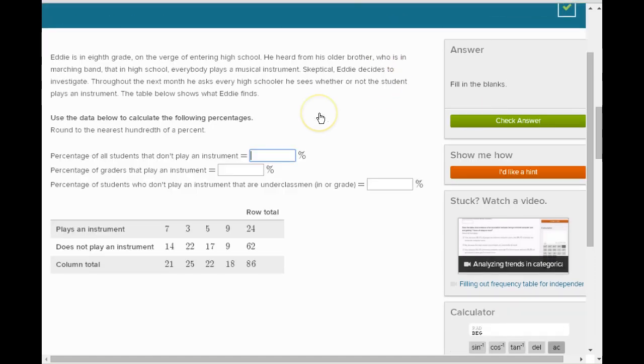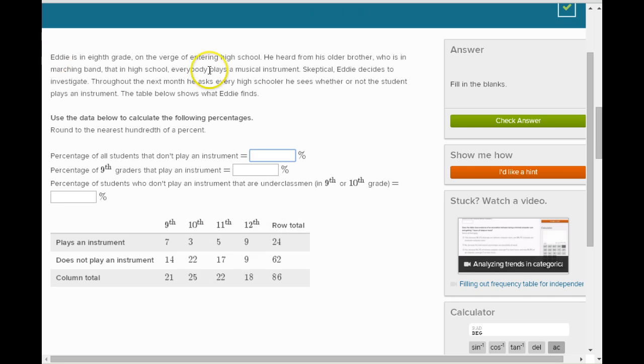Let's go to the next one. Eddie's in eighth grade on the verge of entering high school. He heard from his older brother who is in marching band in high school, everybody plays a musical instrument. Skeptical, Eddie decides to investigate. Throughout the next month he sees every high school student, whether or not the student plays an instrument. So collecting a bunch of data by grade, right, whether or not they play an instrument.